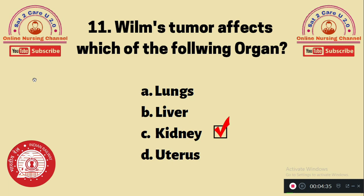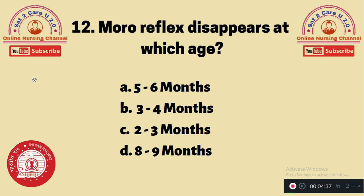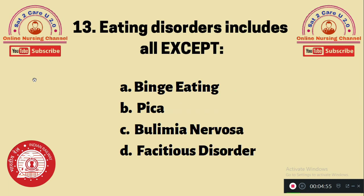Question 12: Moro reflex disappears at which age? A. 5 to 6 months, B. 3 to 4 months, C. 2 to 3 months, D. 8 to 9 months. The Moro reflex disappears at option B — 3 to 4 months.